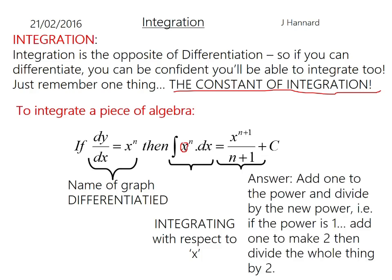So if that was a 1, I'd add 1 to the power, that would become 2, and I'd divide by that new power, which would mean dividing by 2 or half of it. And that little plus c is just the constant of integration. That's what we call it. Don't forget the c. Unless you're going to work it out, then you can drop the c, but we'll talk about that in a minute.